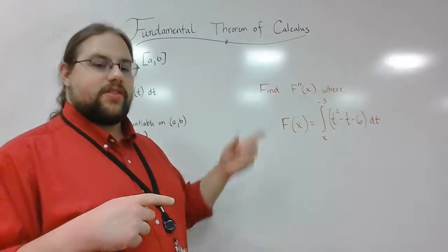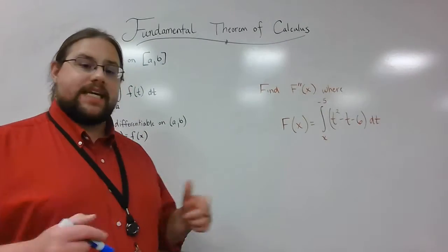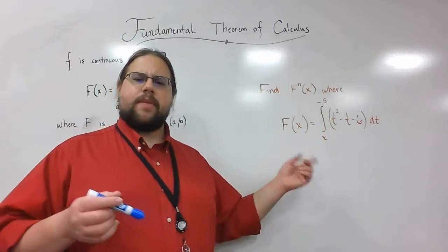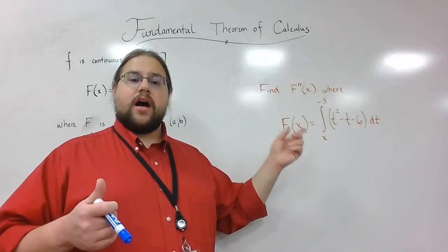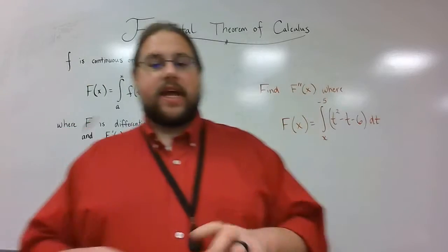So this time we're going to find the second derivative of big F of x, where big F of x is the definite integral from x to negative 5 of t squared minus t minus 6 dt. Now, here's the thing.